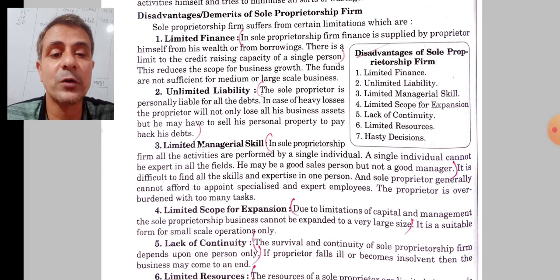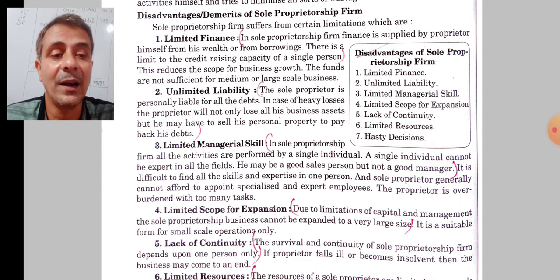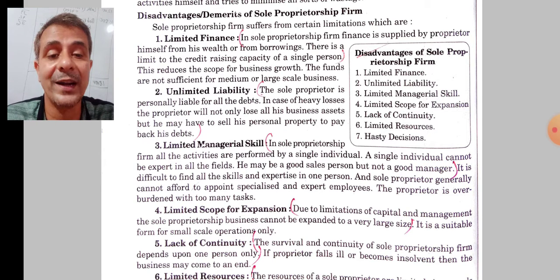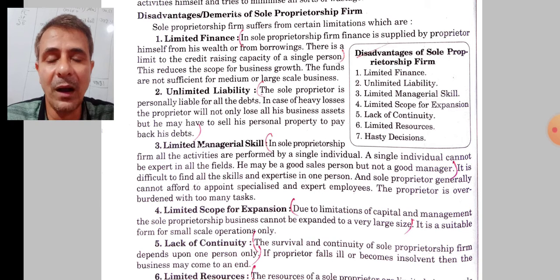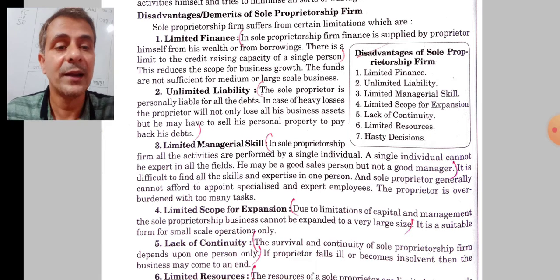Next is limited scope of expansion. Since there is a limitation of capital and management in this form of business, it cannot be expanded to a greater extent. Next is lack of continuity. Since this type of business is run by a single person, if he falls sick or loses in the business, then the organization may shut down.